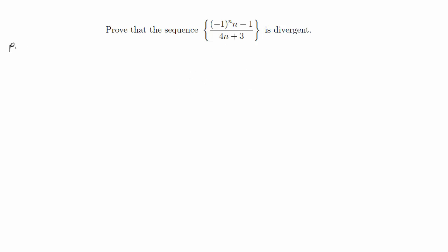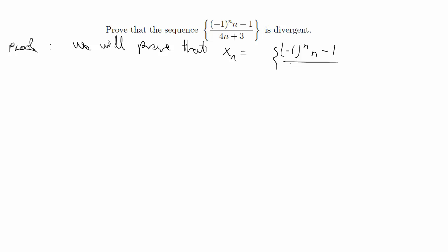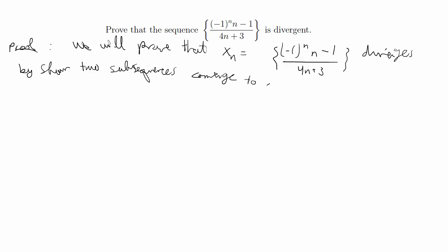So let's go ahead and get started with that. We're going to write a proof. We will prove that the sequence x_n equals negative one to the n times n minus one over four n plus three diverges by showing two subsequences converge to different values.